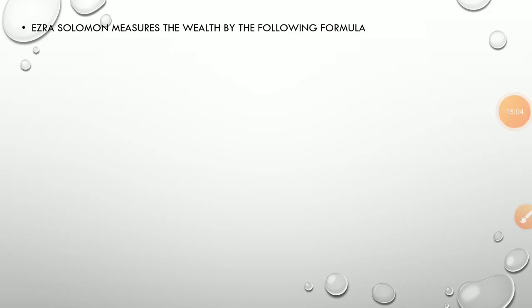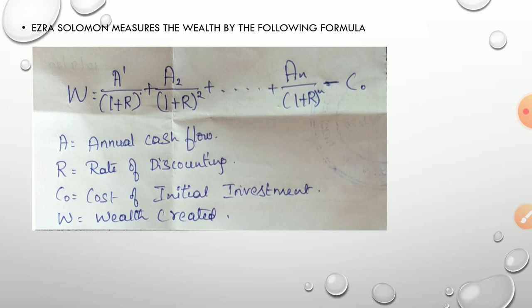Ezra Solomon measures wealth by the formula: W = A1/(1+r)^1 + A2/(1+r)^2 + ... + An/(1+r)^n − C0, where A means annual cash flow, r means rate of discounting, C0 means cost of initial investment, and W means wealth created.